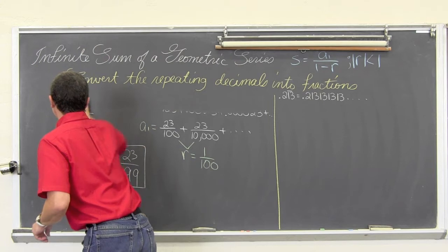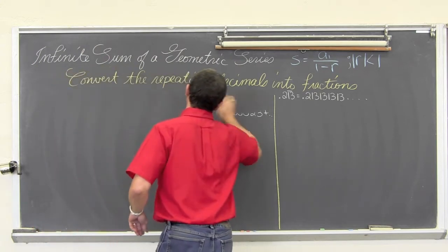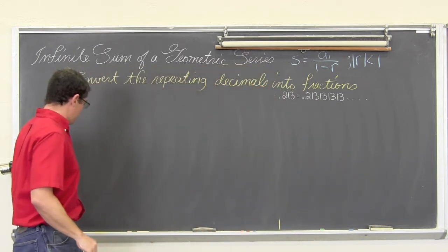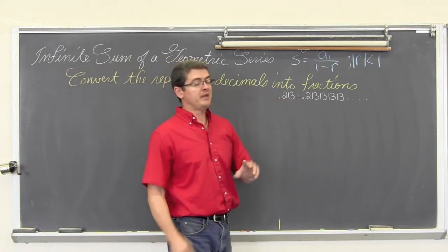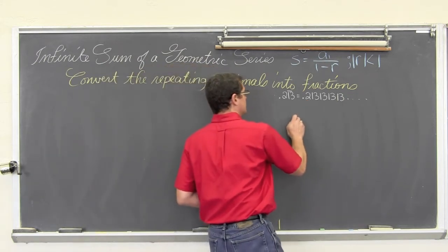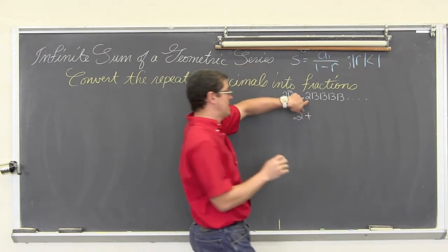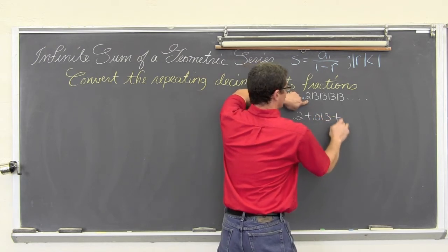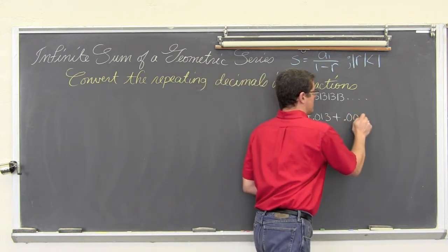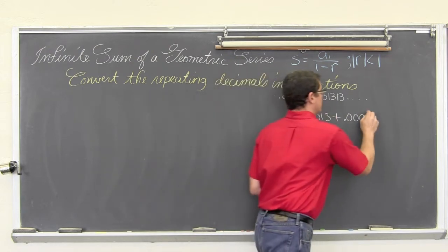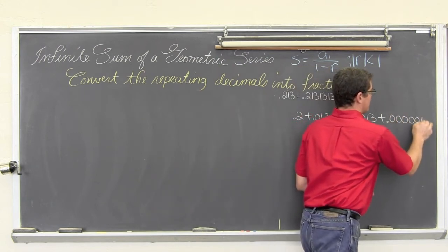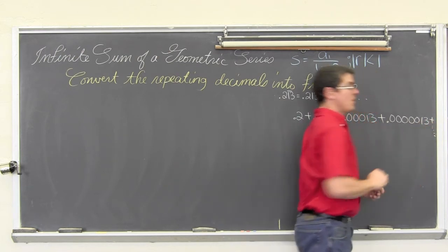Our last example is just a tiny bit different, and it is enough difference to really throw off some students — the fact that not all of the decimals are repeating. Here we have .2 and then the 3 repeats, but not the other values. So when we expand this, we are going to have .2 plus — now there is a zero where I took care of the two — plus .013, and now I need three zeroes: .000013, and then five zeroes and so on.